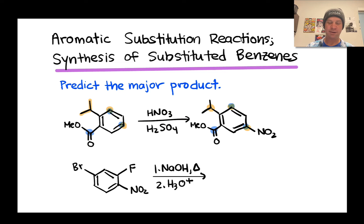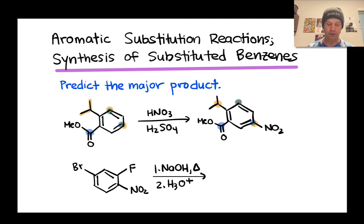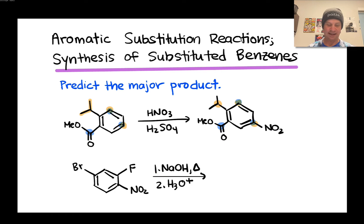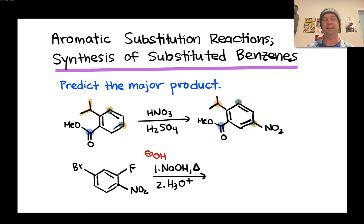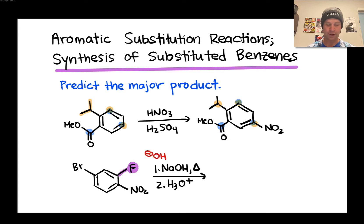In the second case, the reagent is sodium hydroxide, a source of the fantastic nucleophile hydroxide anion. We're thinking about nucleophilic aromatic substitution rather than electrophilic aromatic substitution. The hydroxide nucleophile will displace a good leaving group in the substrate, and the trick is there are two potential leaving groups: fluorine, which could depart as fluoride, and bromine, which could depart as bromide.